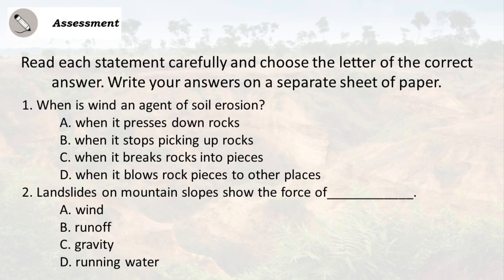Read each statement carefully and choose the letter of the correct answer. Write your answers on a separate sheet of paper. 1. When is wind an agent of soil erosion? A. When it presses down rocks. B. When it stops picking up rocks. C. When it breaks rocks into pieces. D. When it blows rock pieces to other places.